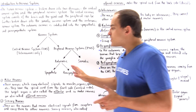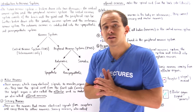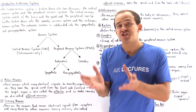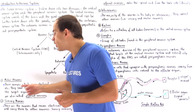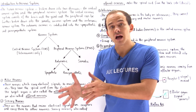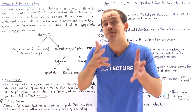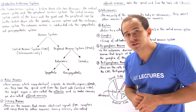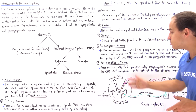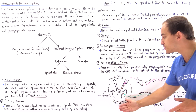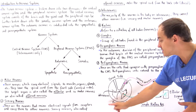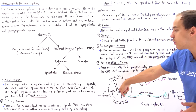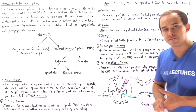Motor neurons basically exit our nervous system. When they exit the spinal cord, they exit from the front side, which is also known as the ventral side. So if this is the cross-sectional area of the spinal cord, then this is the front side — the ventral side — and this is where the motor neuron will leave.